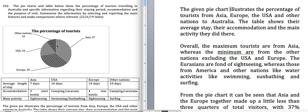The other nations is just 10%, excluding the USA and Europe. So if I just write 'minimum are from other nations,' it might imply USA and Europe are also included in 'other nations' if I don't clarify. So the overview states: 'Overall, the maximum tourists are from Asia whereas the minimum are from the other nations, excluding the USA and Europe.'